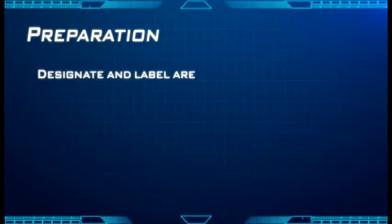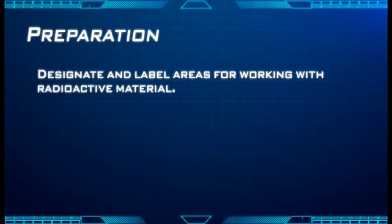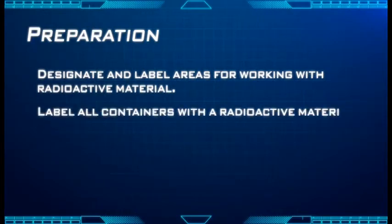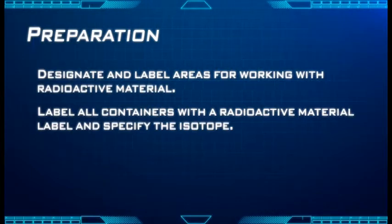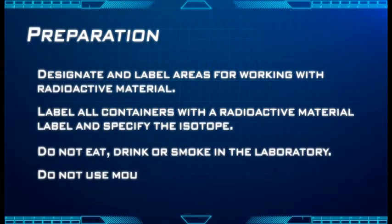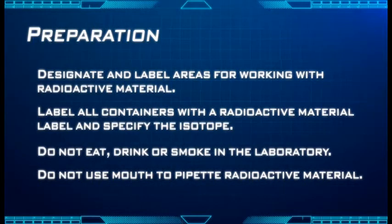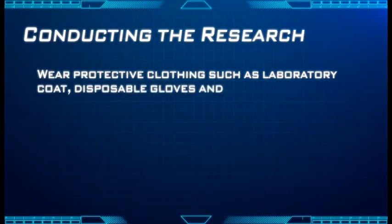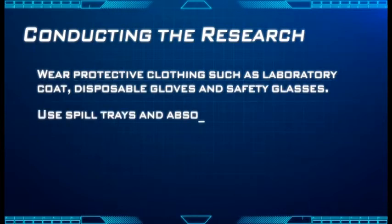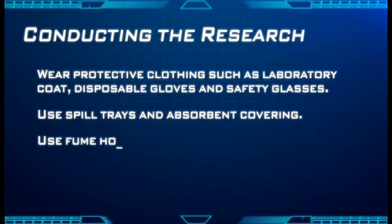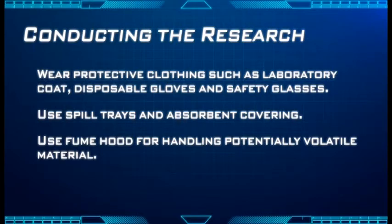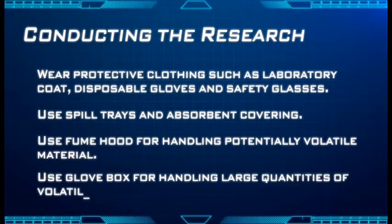Preparation: Designate and label areas for working with radioactive material. Label all containers with a radioactive material label and specify the isotope. Do not eat, drink, or smoke in the laboratory. Do not use mouth to pipet any radioactive material. In conducting the experiment, wear protective clothing such as laboratory coat, disposable gloves, and safety glasses. Use spill trays and absorbent covering. Use a fume hood for handling potentially volatile material, and a glove box for handling large quantities of volatile material.